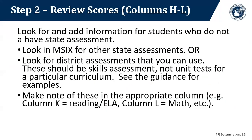Step two: look at columns H through L. Now is the time to look for any students who do not have state assessments — you're filling in gaps before making final determinations. You can look in M6 for other state assessments. The student may have an assessment in M6 for Oregon, Texas, or Florida, and it should say proficient or not proficient. You can also look for district assessments that you can use — these have to be skills assessments, not unit tests for a particular curriculum. At the end of this presentation we will look briefly at the guidance, which includes an actual list of examples for state or district assessments you may be able to use.